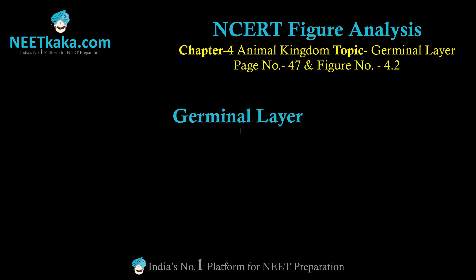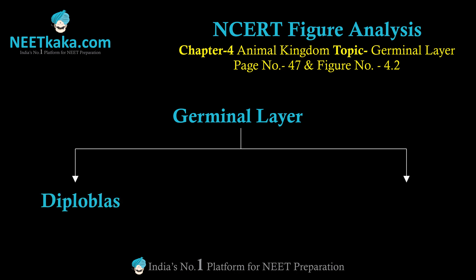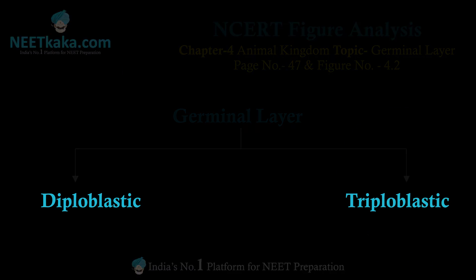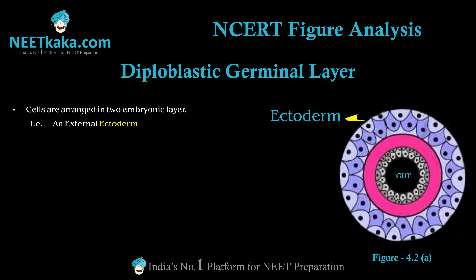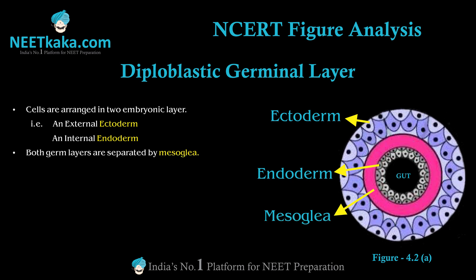On the basis of germinal layer, animals are classified into two categories: diploblastic animals and triploblastic animals. In figure 4.2a, which shows diploblastic organization, cells are arranged in two embryonic layers — an external ectoderm and internal endoderm. Both germ layers are separated by mesoglia.